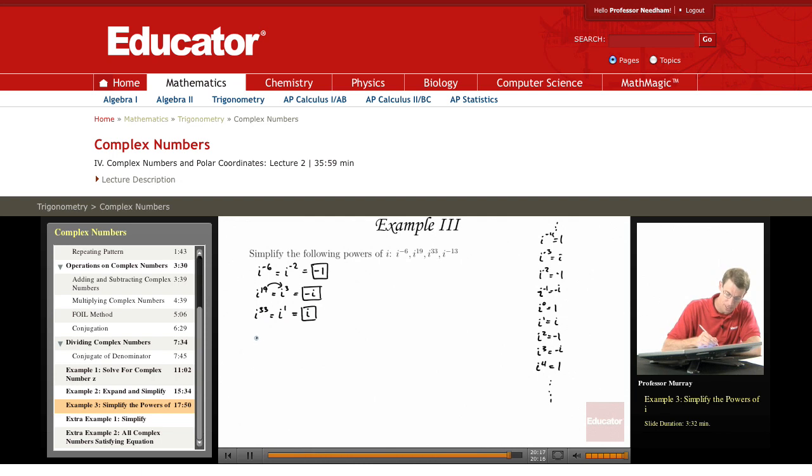And finally i to the negative 13, counting by powers of 4, you got 4, 8, 12, and then 13 is 1 more than 12, so this is the same as i to the negative 1, and we know that that's negative i.